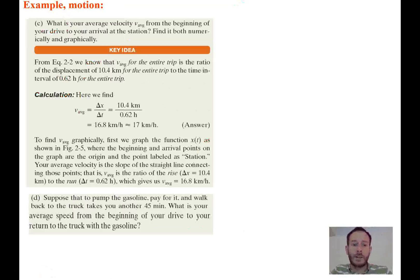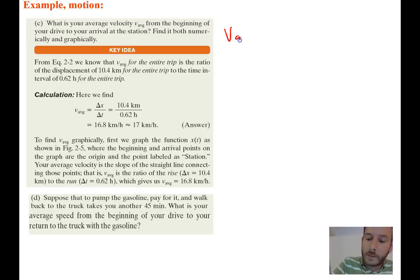It's asking for what is the average velocity, which is our V average, from the beginning of your drive to your arrival at the station. So we're trying to find the average velocity for the entire trip. All right, so they're asking us to find it numerically and graphically. Well, numerically, we can just use our equation that we're getting. So we know that our average velocity is equal to our delta x divided by delta t. And we've found both these already, which is 10 kilometers divided by 0.62 hours.